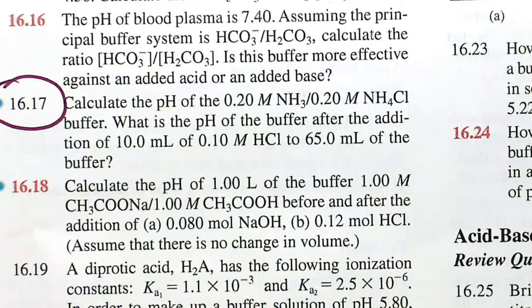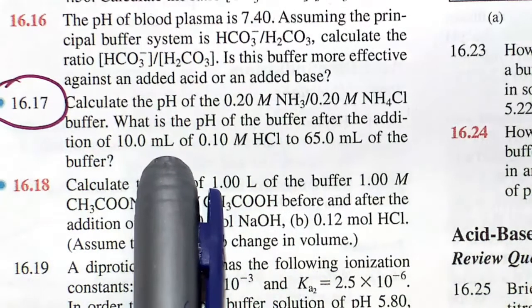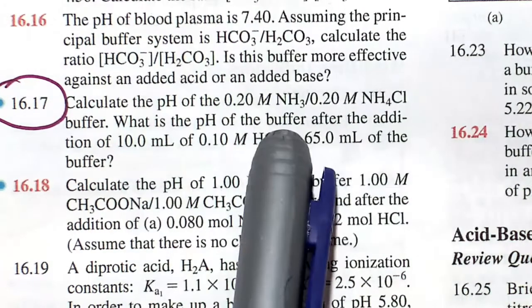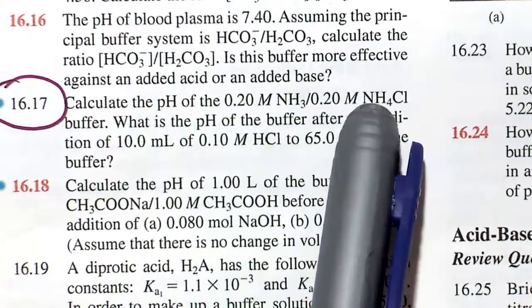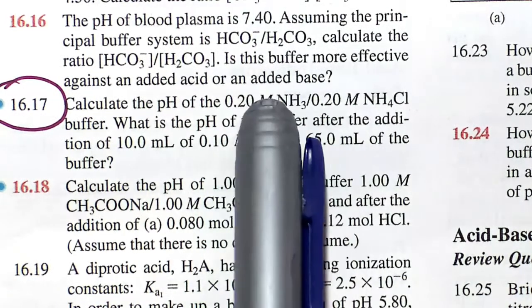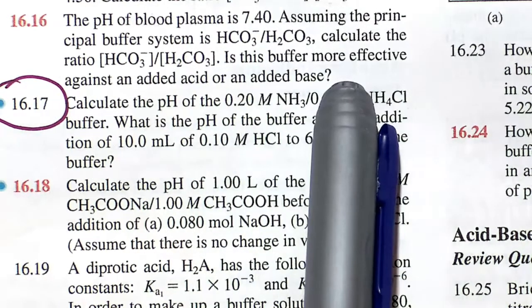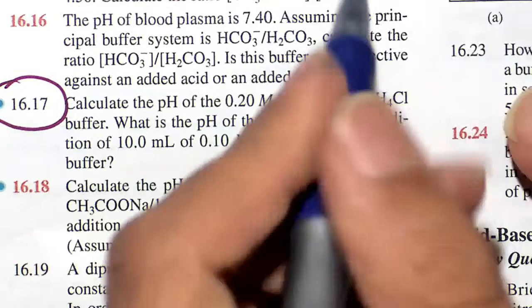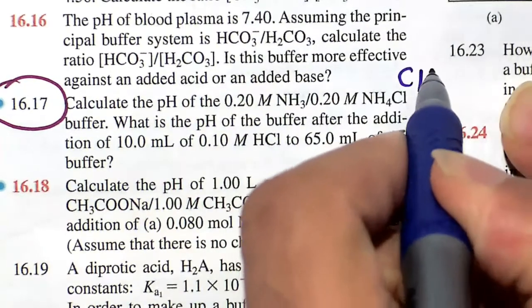In this problem, we will calculate the pH of a buffer solution that's 0.2 molar ammonia with 0.2 molar ammonium chloride. One of the first things we have to recognize is our conjugate acid-base pair. A buffer is just a combination of a weak acid with a weak base, and they're conjugates.